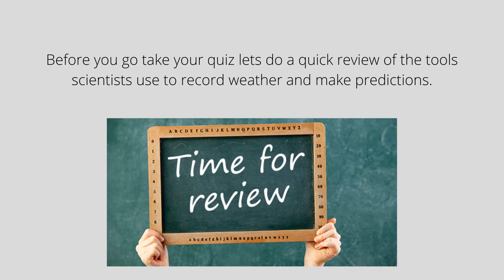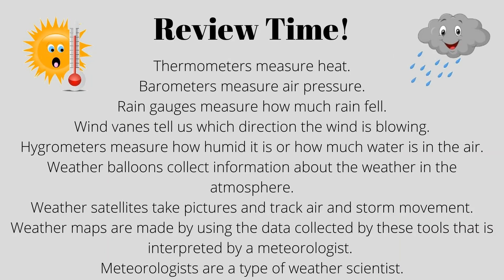Before you go take your quiz, let's do a quick review of the tools scientists use to record weather and make predictions. Thermometers measure heat. Barometers measure air pressure. Rain gauges measure how much rain fell. Wind vanes tell us which direction the wind is blowing. Hygrometers measure how humid it is or how much water is in the air. Weather balloons collect information about the weather in the atmosphere. Weather satellites take pictures and track air and storm movements. Weather maps are made by using the data collected by these tools, interpreted by a meteorologist. Meteorologists are a type of weather scientist.